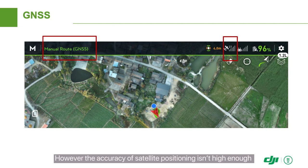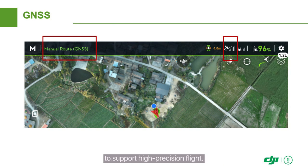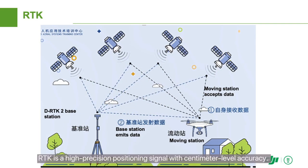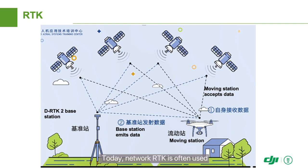However, the accuracy of satellite positioning isn't high enough to support high-precision flight. For much more accurate flights, RTK is required. RTK is a high-precision positioning signal with centimeter-level accuracy. Today, network RTK is often used and a cellular data connection is required for communication.